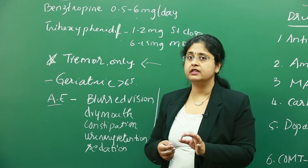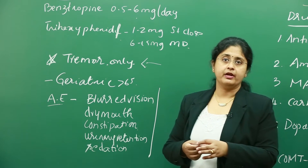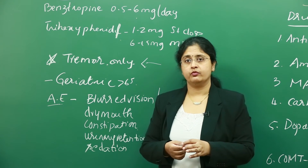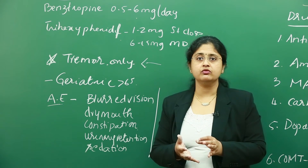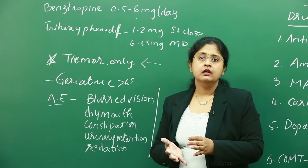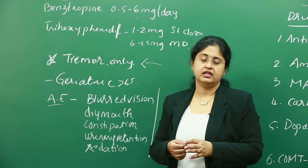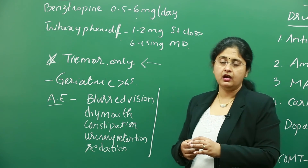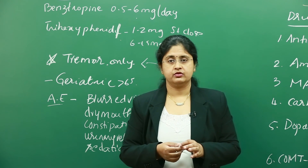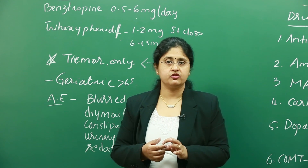The younger population will be able to tolerate anticholinergics much better than the elderly. So we use anticholinergics when a patient is younger — probably under 60 or 65 — and they do not have any of these pre-existing issues. In such cases, anticholinergics can definitely be used as monotherapy or as an adjunct with carbidopa-levodopa. In summary, anticholinergics are indicated for resting tremor only.